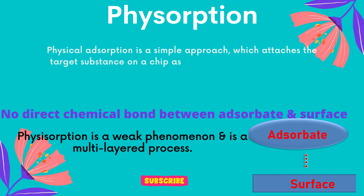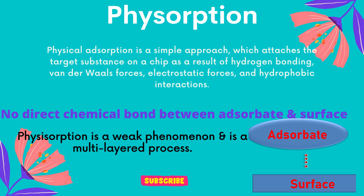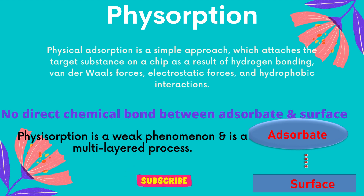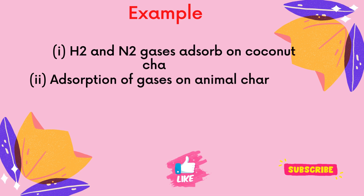Physical adsorption attaches the target substance on a surface as a result of hydrogen bonding, van der Waals forces, electrostatic forces, and hydrophobic interaction. There is no direct chemical bond between adsorbate and surface. Physisorption is a weak phenomenon and is a multi-layered process.